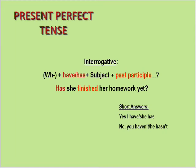Interrogative sentences میں شروع میں wh word آ سکتا ہے یا has/have کو ہم شروع میں shift کر لیتے ہیں۔ Has اور have کے درمیان subject آتا ہے۔ مثلاً: 'Has she finished her homework yet?' اگر answer دینا ہو تو: 'Yes, she has' یا negative میں 'No, she hasn't' / 'No, I haven't.' So this is how we make interrogative sentences of the present perfect tense.